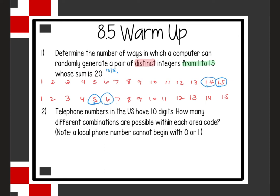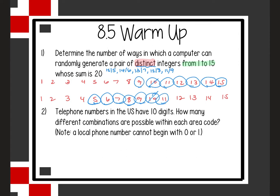Then 14 would go with 6. Then 13 and 7. Then 12 and 8. Then 11 and 9. We can't do 10 and 10 because it has to be distinct integers. But we can keep going: 9 and 11, 8 and 12, 7 and 13, 6 and 14, and 5 and 15. 4 with anything — and 3, 2, and 1 as well — won't work.